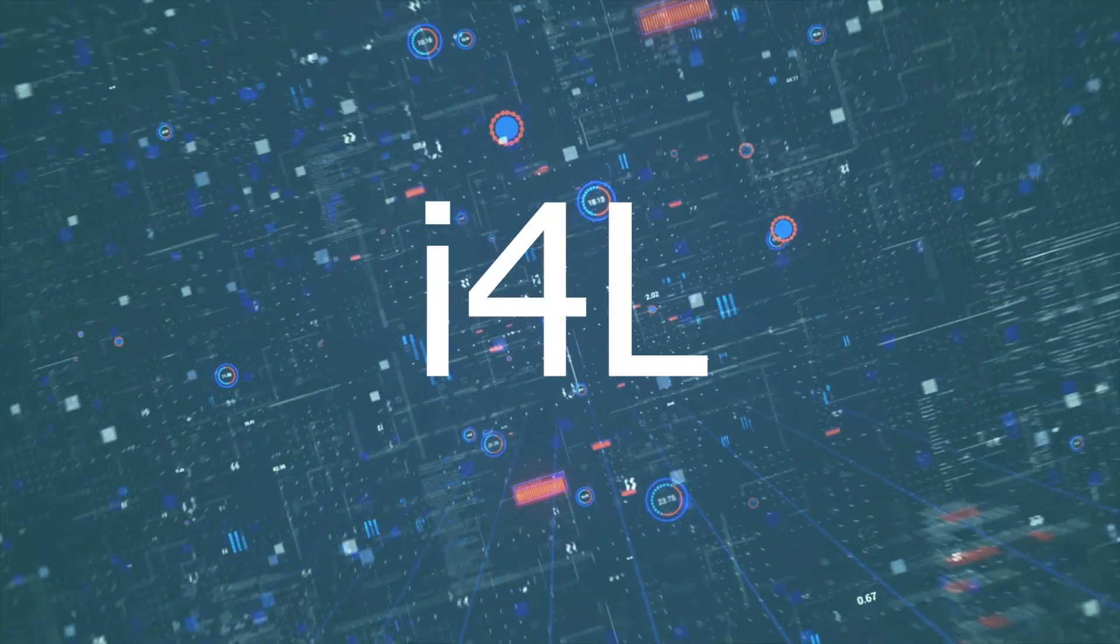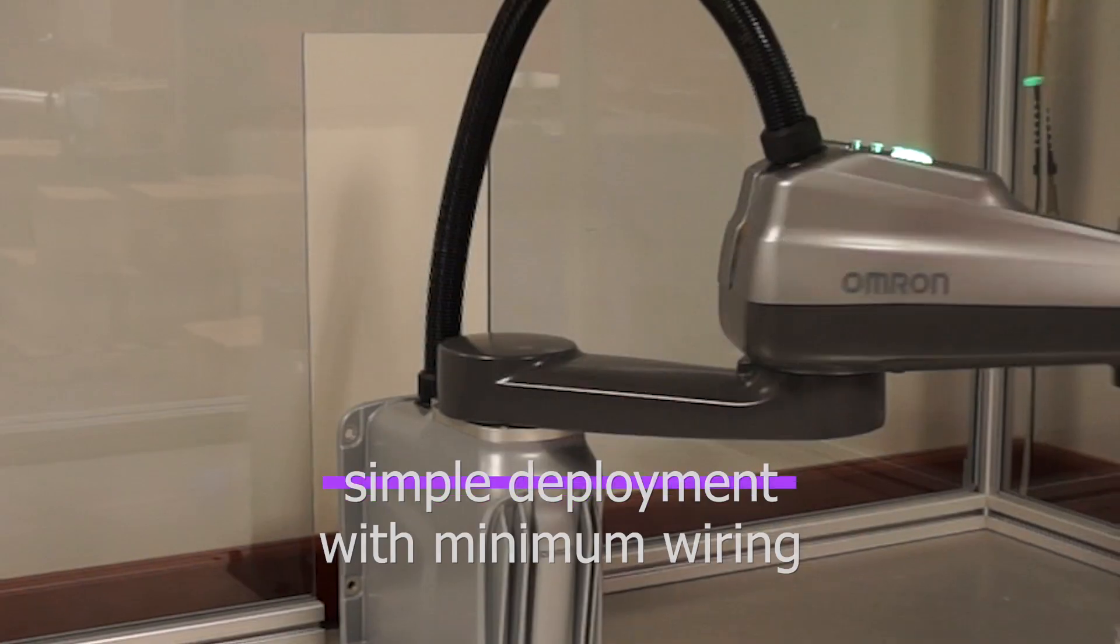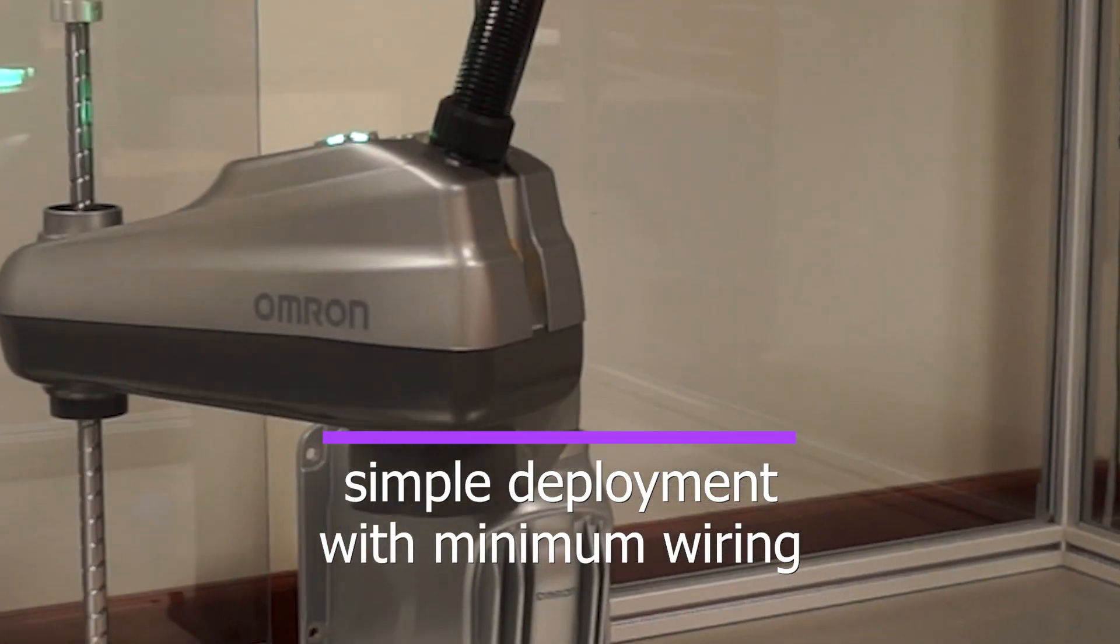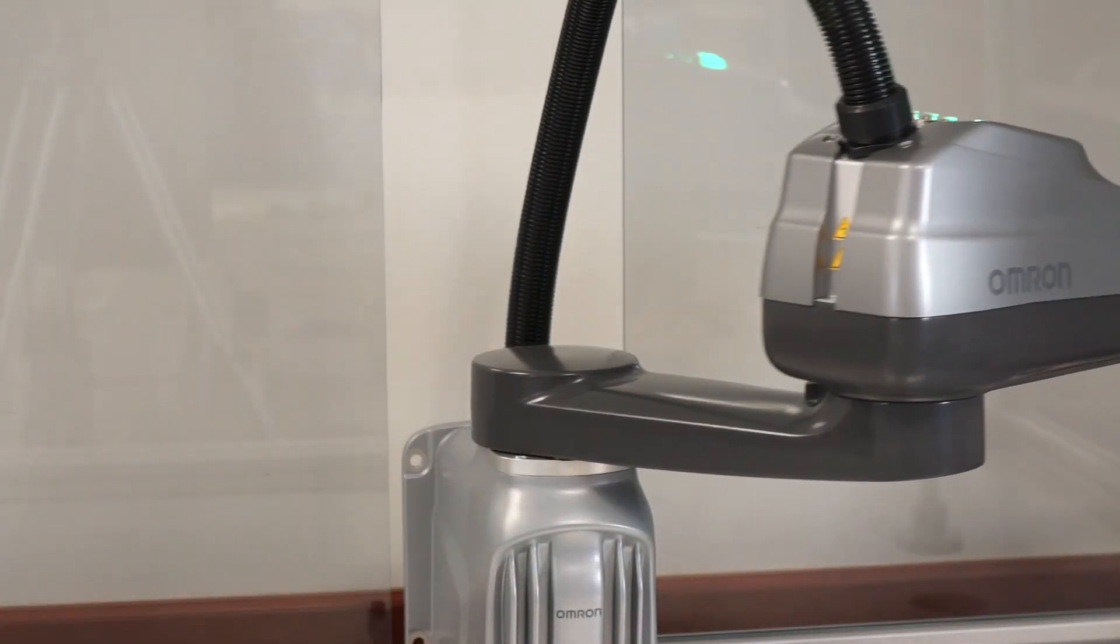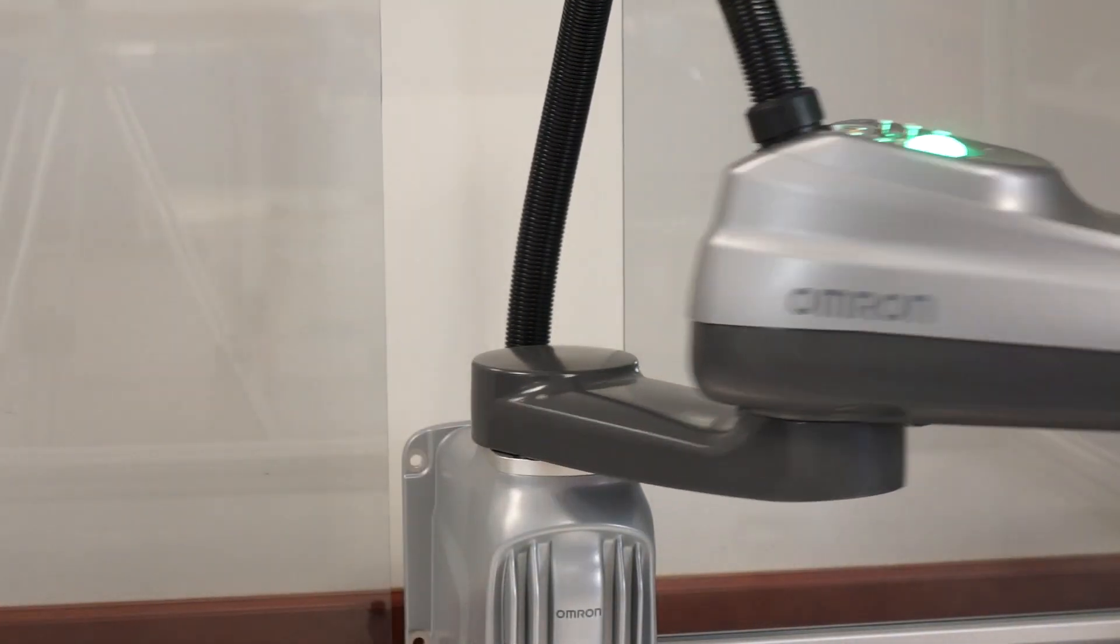The i4L is a fully integrated robot with amplifier and base, which makes for simple deployment with minimal wiring. The outer link includes pneumatic and I.O. pass-through, as well as a multi-color status light so operators can quickly verify robot operation.